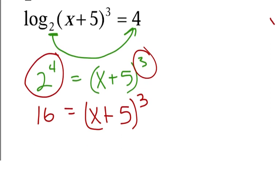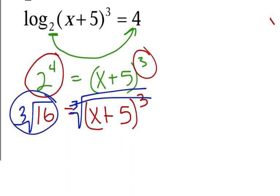From here, what I want to do is, to get rid of that 3rd, I've got to cube root it. So I cube root both sides, and this cancels. I'll get the cube root of 16, which is 2.5198 equals x plus 5.